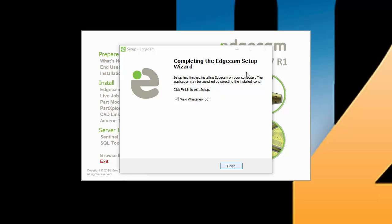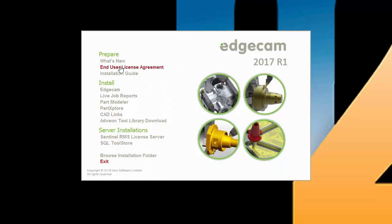You can also get to what's new from the installation splash screen and anytime from the Edgecam help menu. The other items in the install section are optional. As previously noted, the live job reports, part modeler, and CAD links are installed automatically as part of a typical Edgecam installation. These install screen options are provided for users that wish to install them separately, which may be desirable when these peripheral applications are used on computers other than the Edgecam workstations.